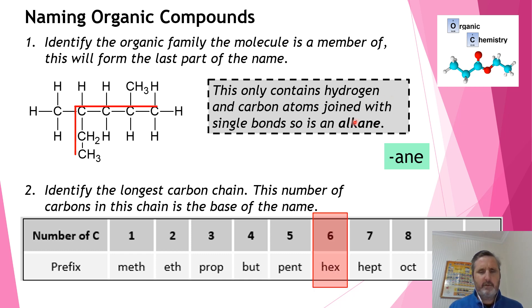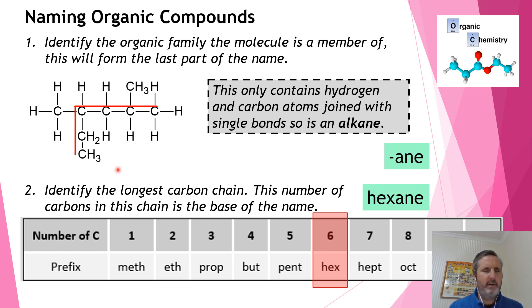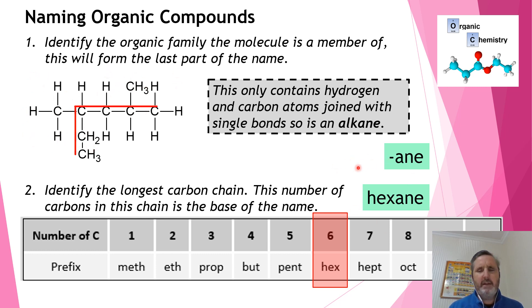Six is equal to 'hex', so this molecule's base name is hexane. It has two functional groups coming off the main chain, but the main chain name is hexane.